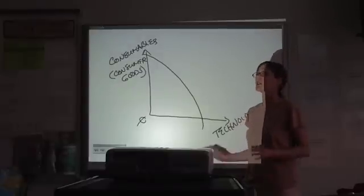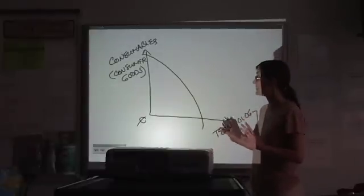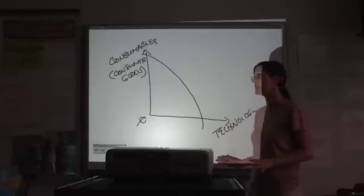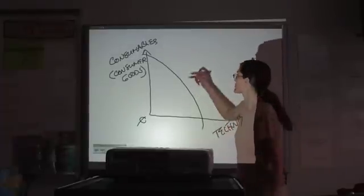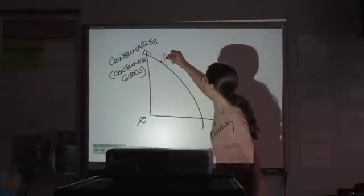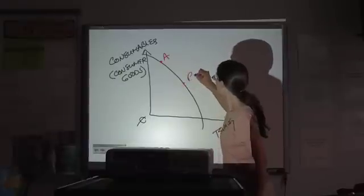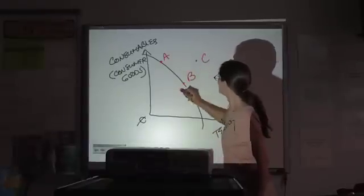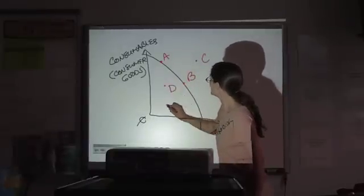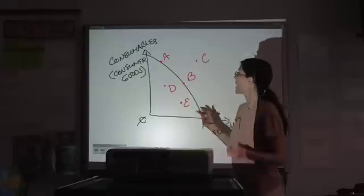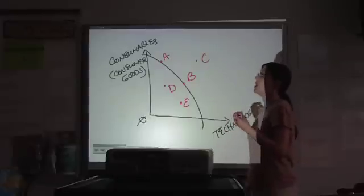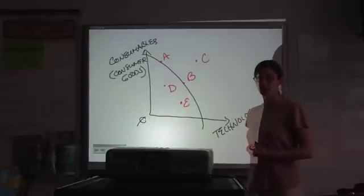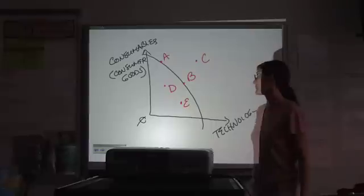Now, the kind of thing that might be asked about this is where on your graph among these points, A, B, C, D, or E, would the society want to operate to ensure future growth?